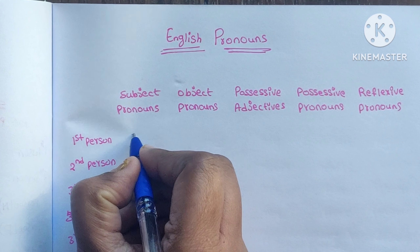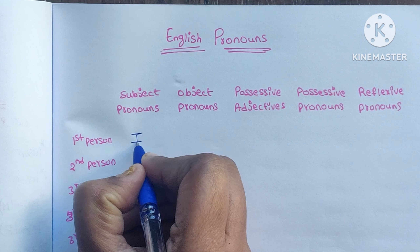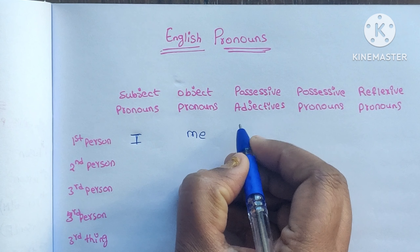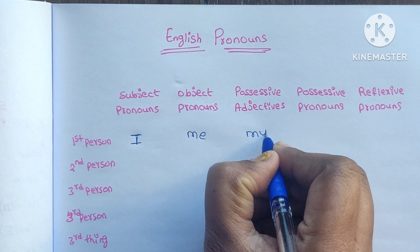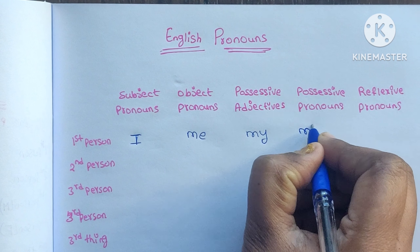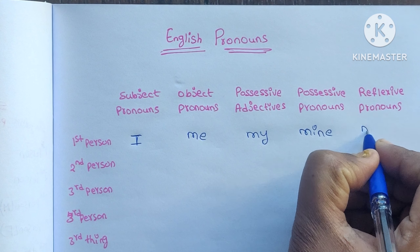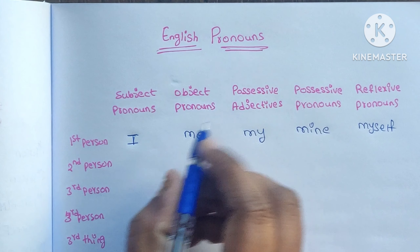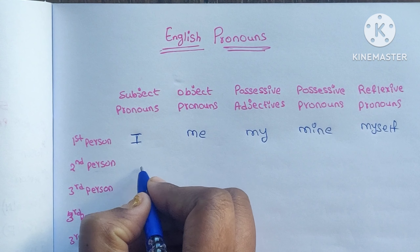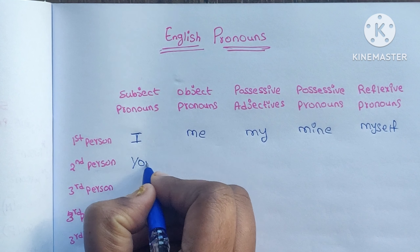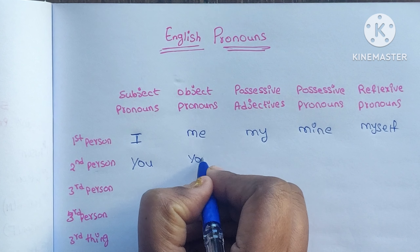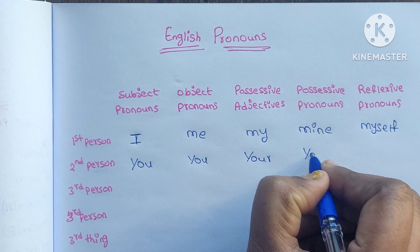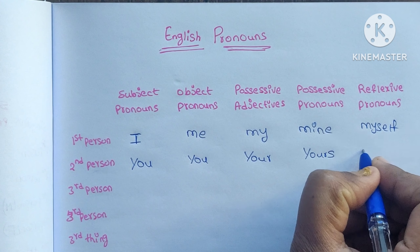First person singular: subject is 'I', object is 'me', possessive adjective is 'my', possessive pronoun is 'mine', and reflexive is 'myself'. Second person singular: subject is 'you', object is 'you', possessive adjective is 'your', possessive pronoun is 'yours', and reflexive is 'yourself'.